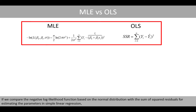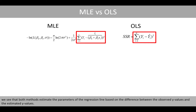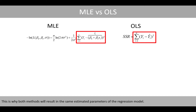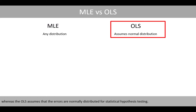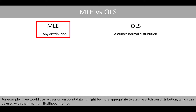If we compare the negative log-likelihood function based on the normal distribution with the sum of squared residuals for estimating the parameters in simple linear regression, we see that both methods estimate the parameters of the regression line based on the difference between observed y values and estimated y values. This is why both methods will result in the same estimated parameters of the regression model. One advantage of using maximum likelihood instead of ordinary least squares is that the maximum likelihood method can be used with distributions other than the normal distribution, whereas ordinary least squares assumes that errors are normally distributed for statistical hypothesis testing. For example, if we would use regression on count data, it might be more appropriate to assume a Poisson distribution, which can be used with the maximum likelihood method.